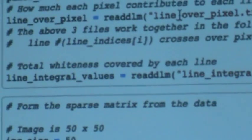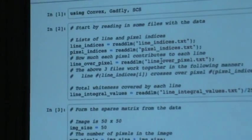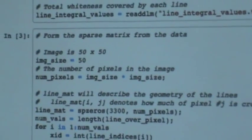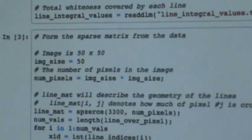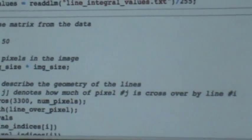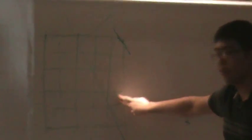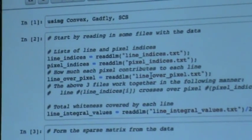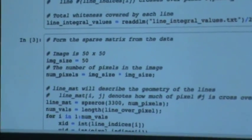In our data, we have three data files: line indices, pixel indices, and line over pixels. Line indices tells you a list of various lines, pixel indices the corresponding pixel numbers, and line over pixel tells you how much of that pixel the line crossed over. For example, if this was line one and this was pixel two and pixel three, the value that crosses over pixel two will be very small, but the value over pixel three will be rather large. And the value over this pixel will be zero because it does not cross over at all. Then the last file is line integral values, which tells you for each line how much total whiteness.